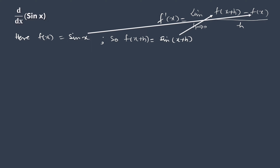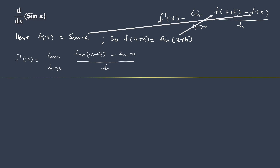Now substituting these values in the formula, we get: limit h goes to 0, f of x plus h — that is sine of x plus h — minus f(x), which is minus sine x, and this whole divided by h.